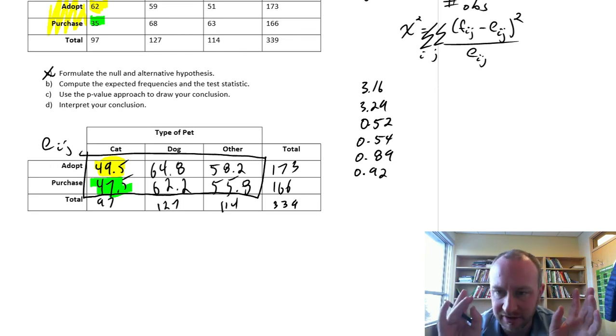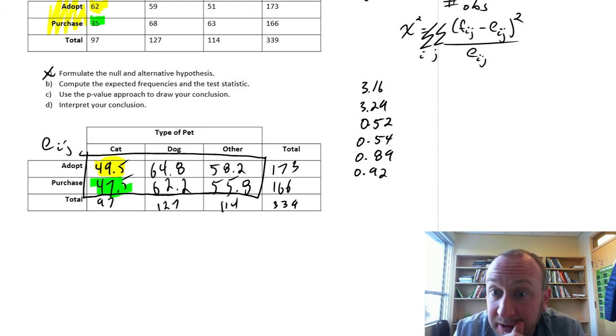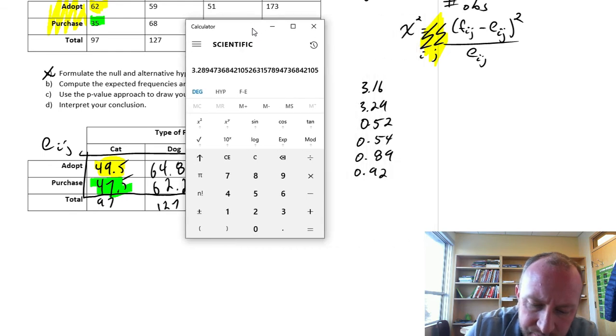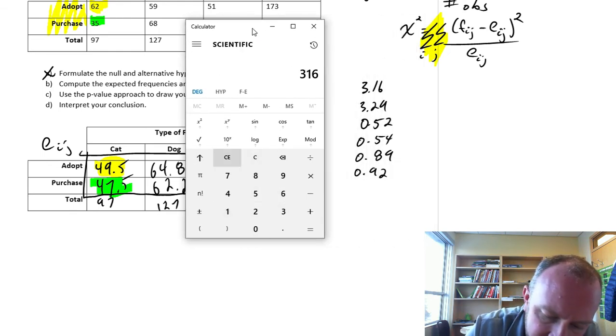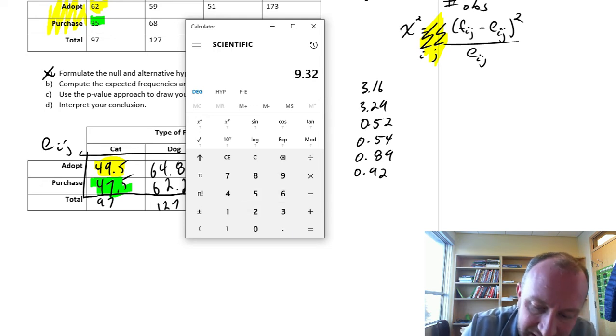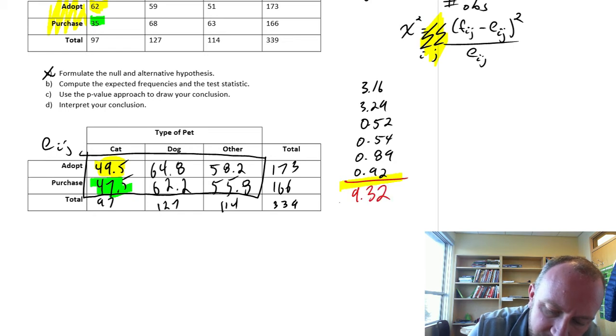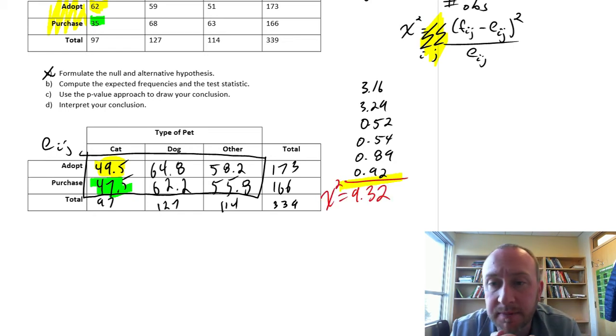We're looking at those expected and those observed values. So now we have all of these different values. Now we apply the summation, so we need to add all of these together. So 3 point 16 plus 3 point 29 plus 0.52 plus 0.54, 0.89, and 0.92. And I have a test statistic of 9.32.